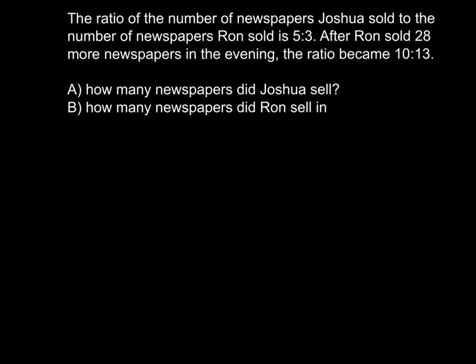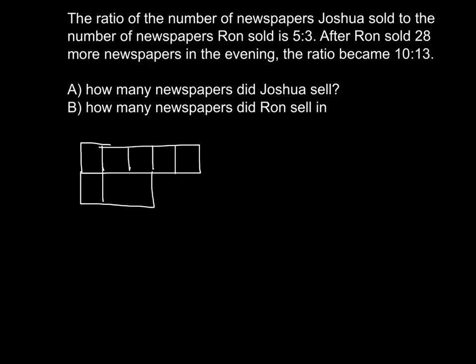Okay, pause the video and try this one on your own. This one is a before-and-after ratio word problem. Okay, let's go over the problem. It says the ratio of the number of newspapers Joshua sold to the number of newspapers Ron sold is 5 to 3. After Ron sold 28 more newspapers in the evening, the ratio became 10 to 13. So we want to draw out our original ratio, which is 5 to 3 — make sure we label — that's Joshua to Ron.